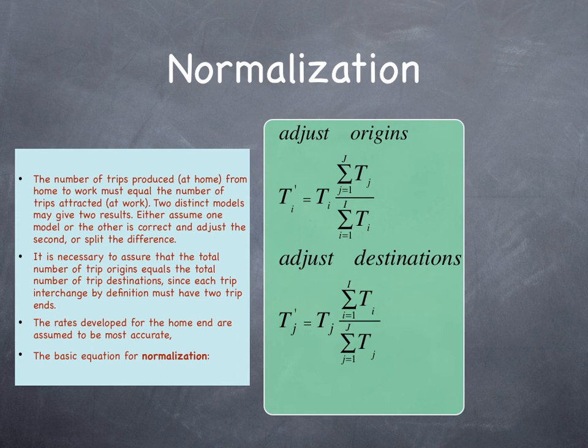The rates developed for the home end are assumed to be the most accurate, typically. And so the basic equation for normalization is given that if you want to adjust your destinations, Tj prime equals Tj, your original number of trip destinations, multiplied by the ratio of the sum of all trip origins divided by the sum of all trip destinations.